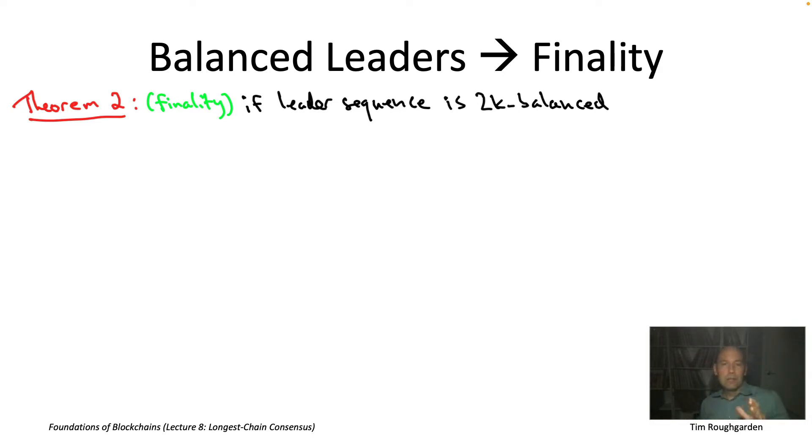Don't forget what this means. A leader sequence is W balanced if in any window of at least W consecutive leaders a strict majority of them are honest. So strictly less than 50% of the leaders in any length W or bigger window, strictly less than 50% can be Byzantine.